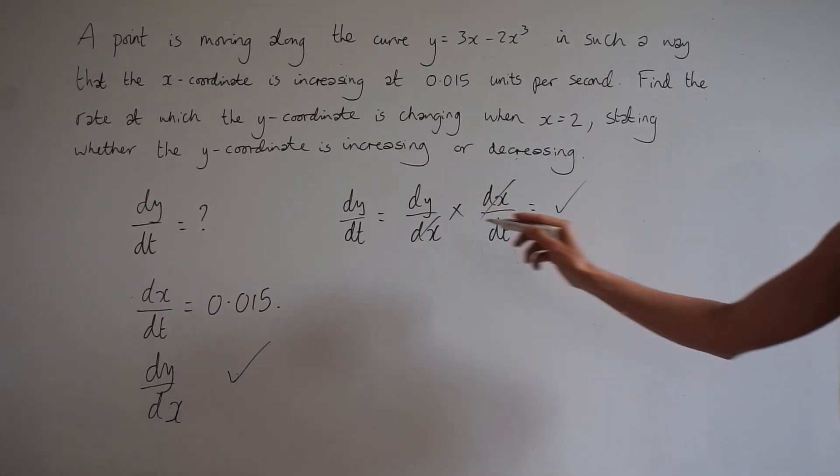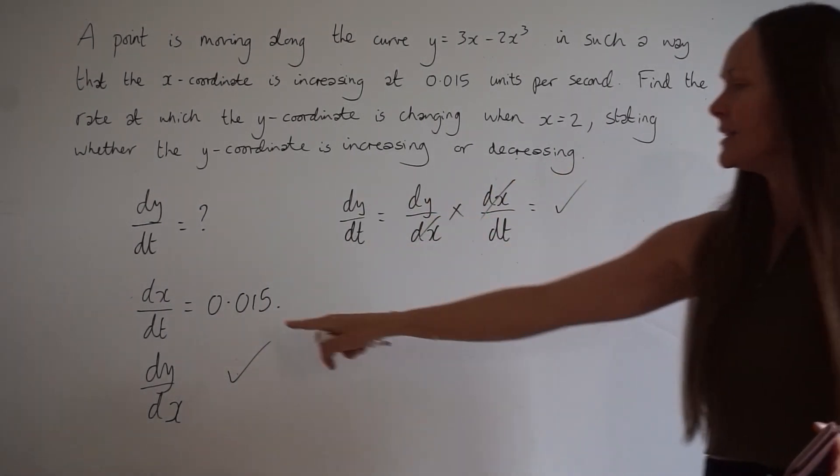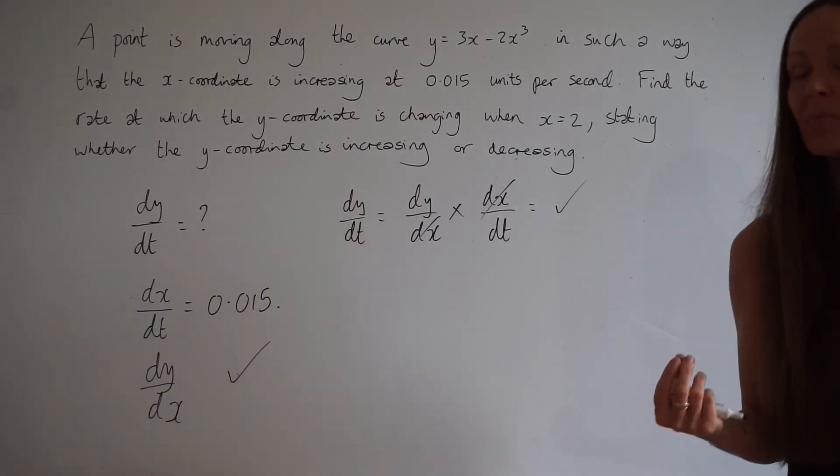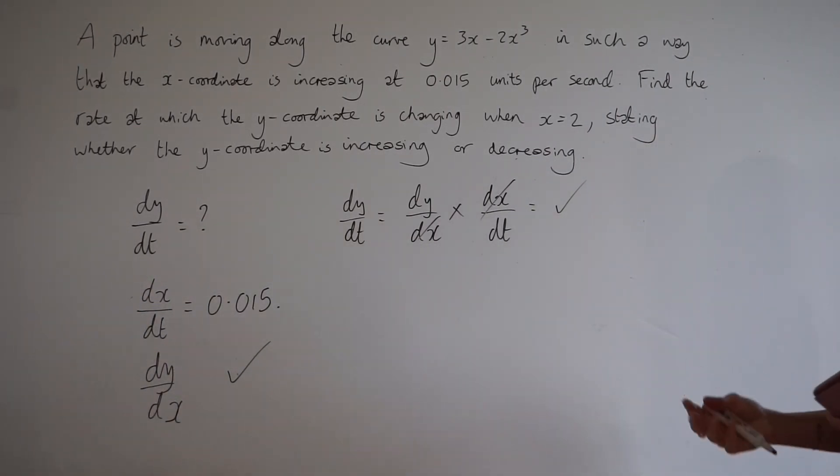So we're going to find dy/dx, use dx/dt, multiply them together, and that will give us dy/dt, which is the rate at which the y coordinate is changing.